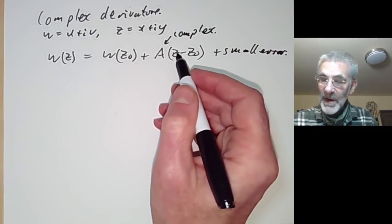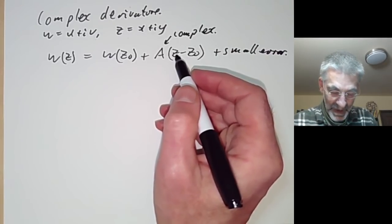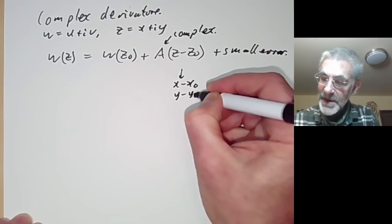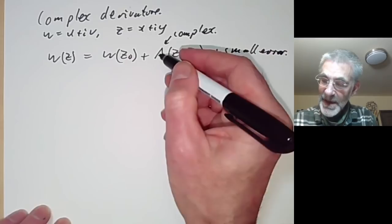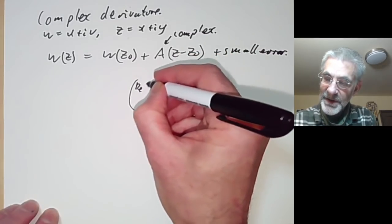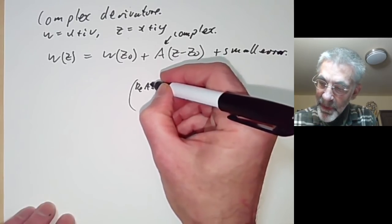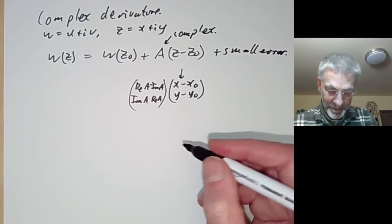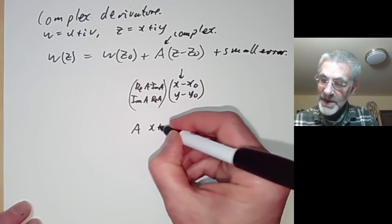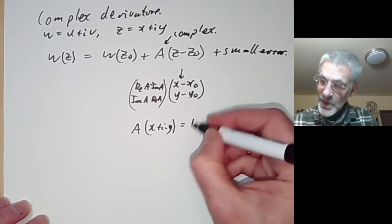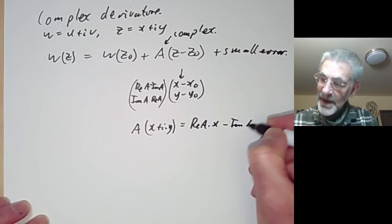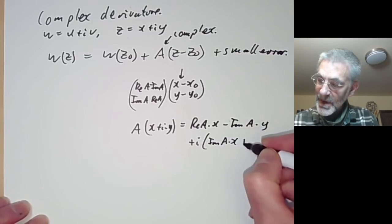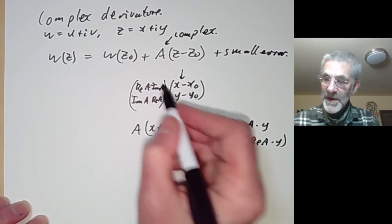If we think of z as being two variables x and y, we can think of (x minus x zero, y minus y zero) and ask how does the complex number A act as a matrix. It acts as the matrix with real part of A, minus imaginary part of A in the first row, and imaginary part of A, real part of A in the second row. That's just saying that if we multiply A by x plus iy, the real part is Re(A)·x minus Im(A)·y and the imaginary part is Im(A)·x plus Re(A)·y, and writing this in matrix form gives exactly that matrix.